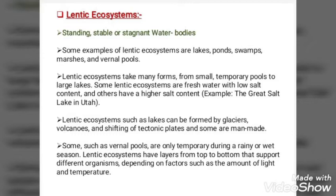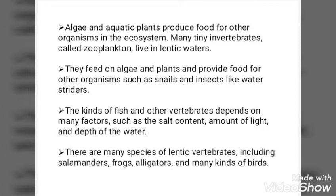Lentic ecosystems have layers from top to bottom that support different organisms depending on factors such as the amount of light and temperature. Algae and aquatic plants produce food for other organisms in the ecosystem. Many tiny invertebrates called zooplankton live in lentic waters; they feed on algae and plants and provide food for other organisms such as snails and insects like water striders.